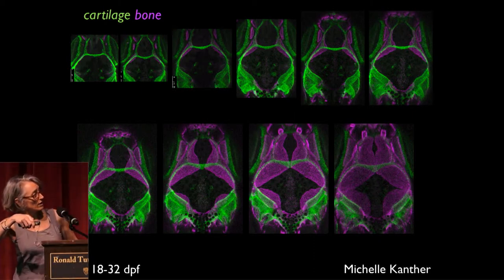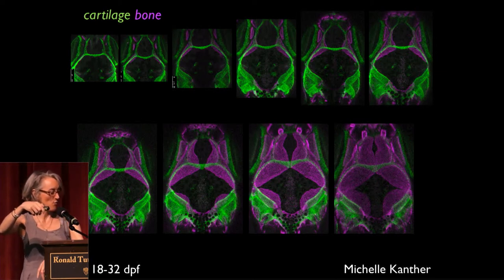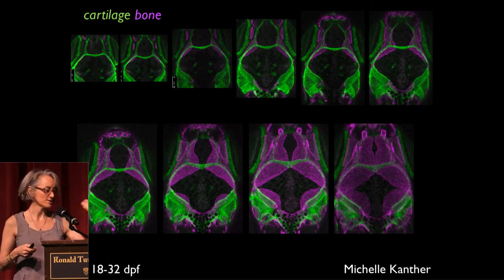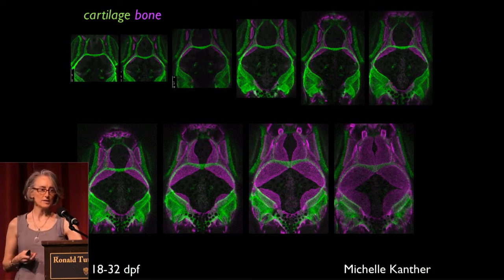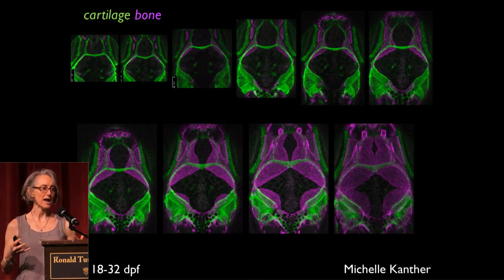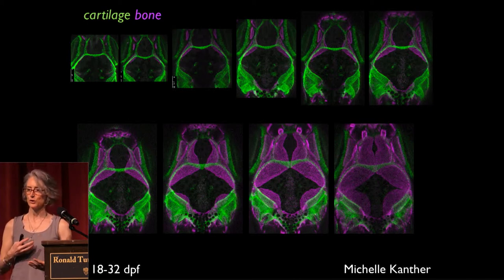We can image all the way through until the frontal bones are starting to overlap and form the interfrontal suture, and carry the imaging out to look at slightly later stages in skull development. This has been tremendously informative to get this kind of dynamic developmental information. For all of the wonderful imaging that can be done in the mouse, it's still not feasible to do this kind of dynamic imaging during skull development, since all these critical stages occur when the mouse is still in utero.